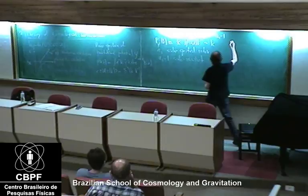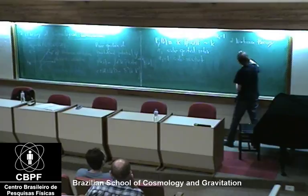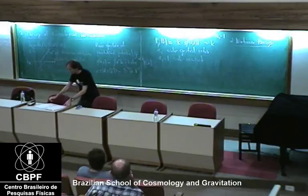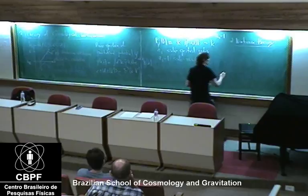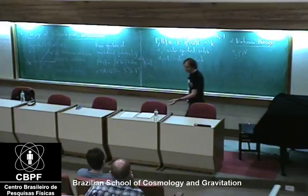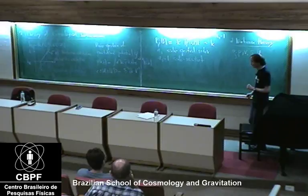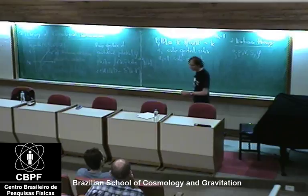Now I will turn to the Newtonian theory. In the Newtonian theory, we have variables for perfect fluid matter: energy density, pressure, velocity of the fluid, and possibly entropy. And then we have the Newtonian gravitational potential. So matter is specified by those variables, and gravity is specified by the potential.